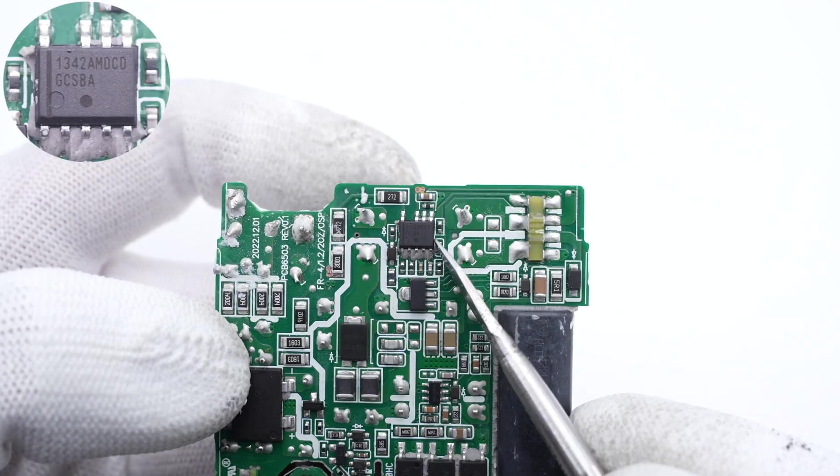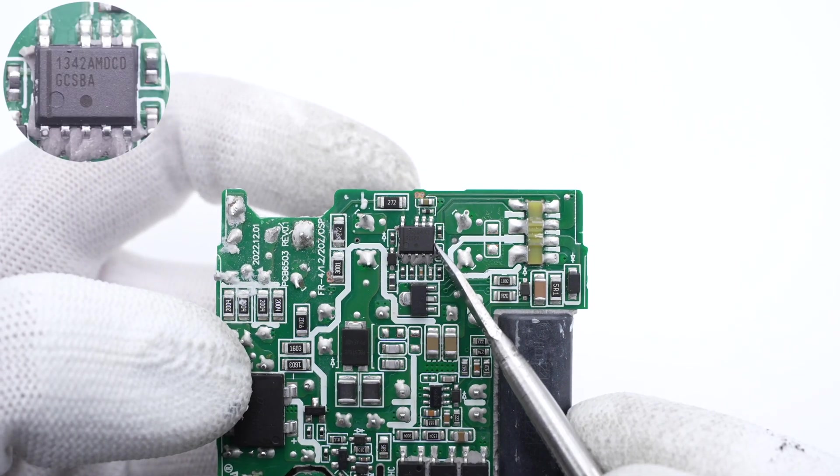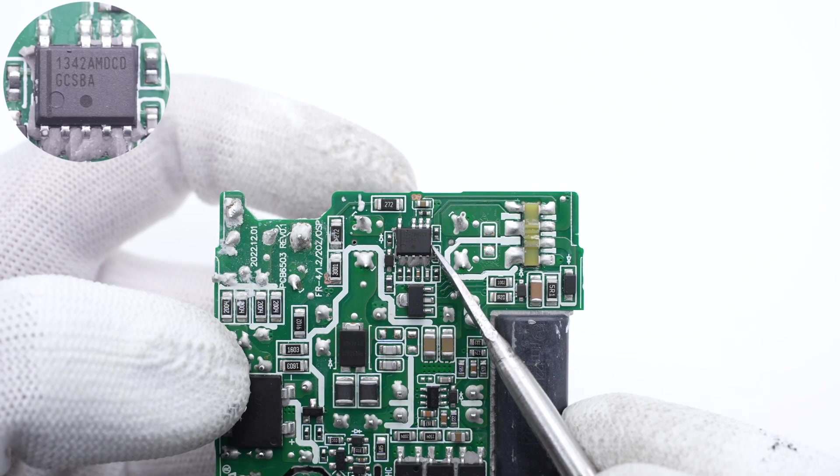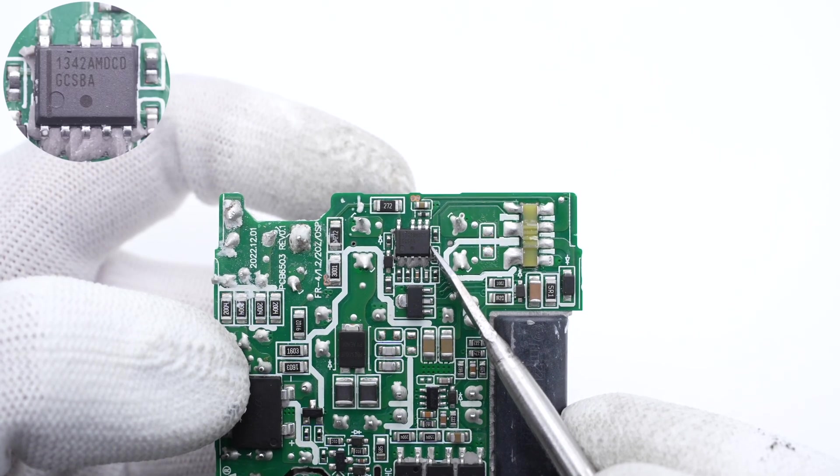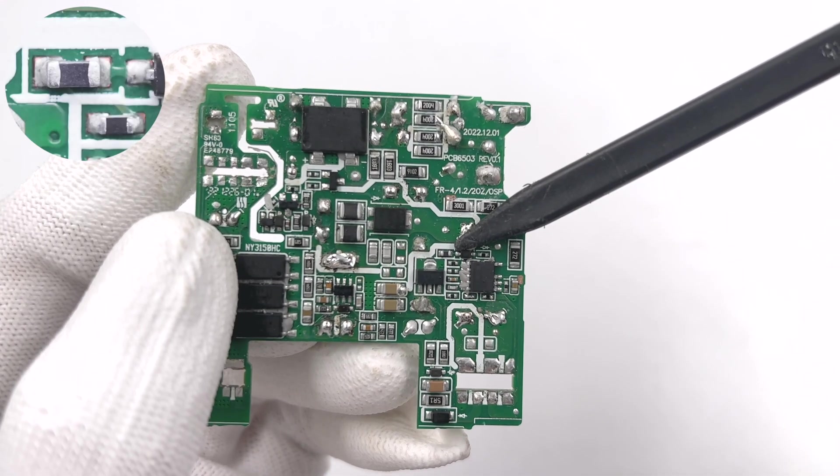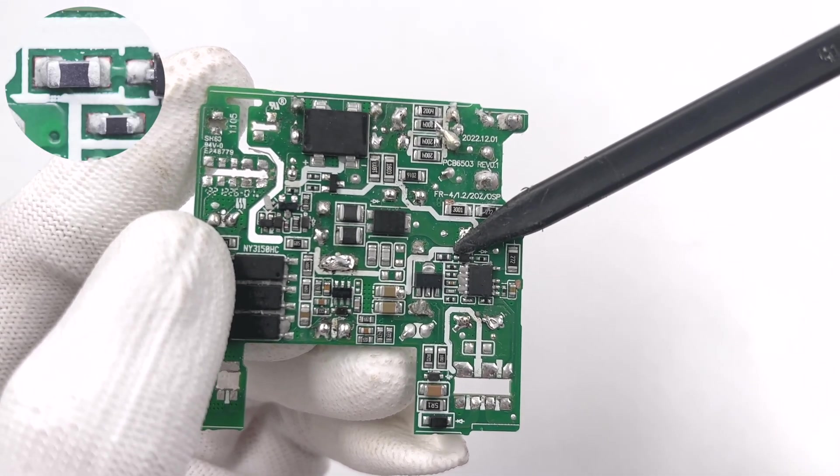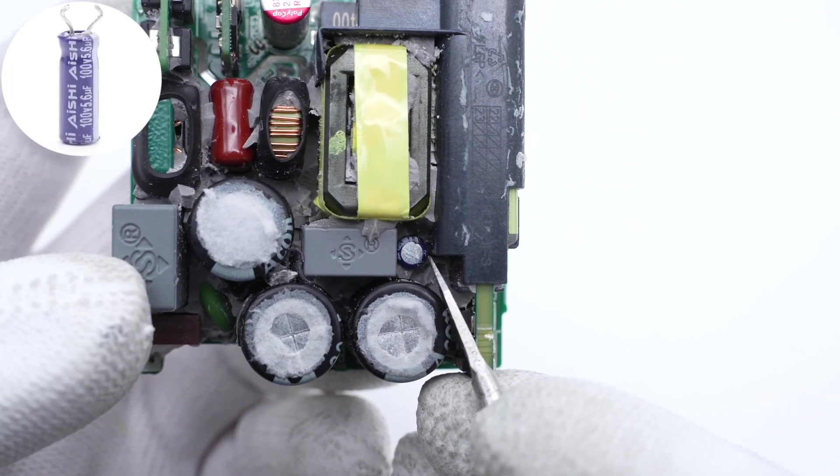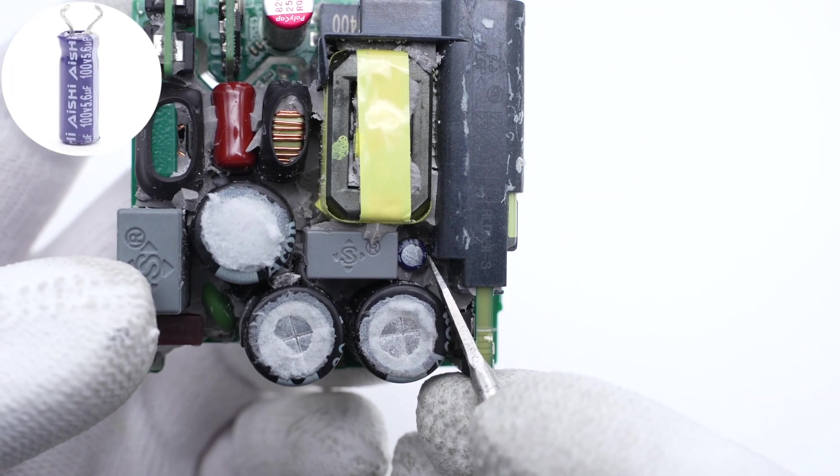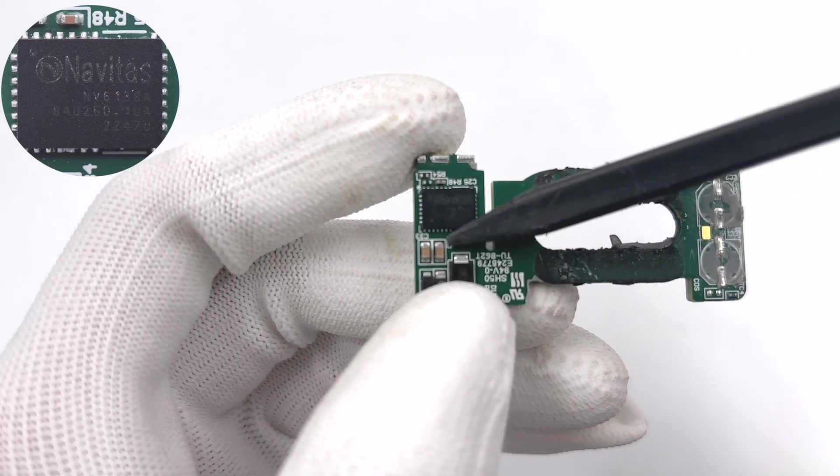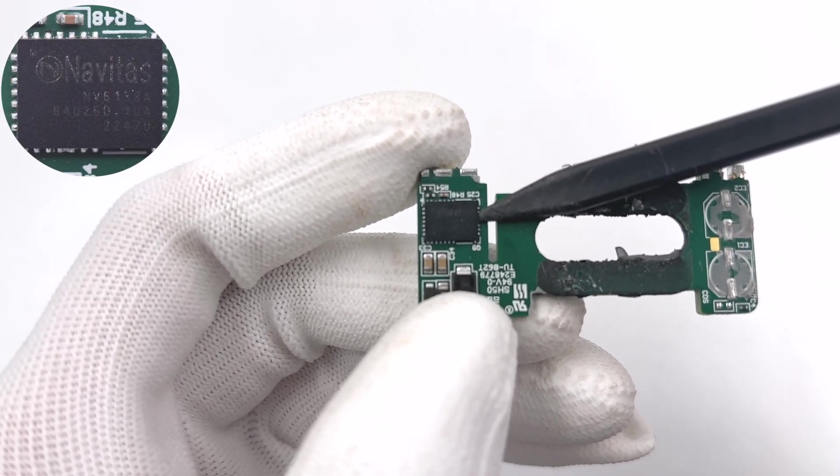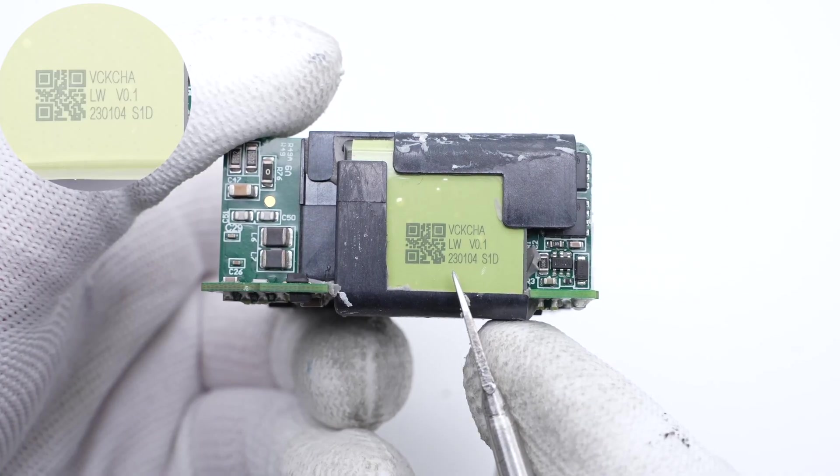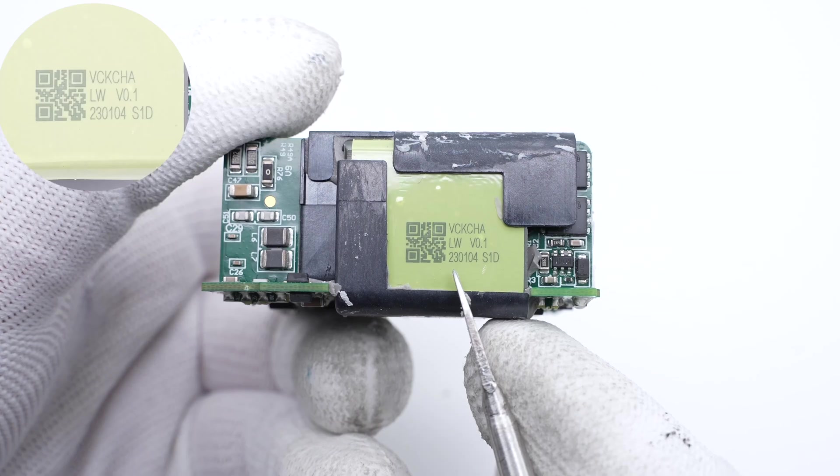The main control chip is from OnSemiconductor, which is a flyback quasi-resonant PWM controller. It integrates active X-capacitor discharge feature. The thermistor can work with main control chip to detect the temperature. This tiny capacitor that powers the main control chip is 100V 5.6μF. The primary GaN IC is also from Navitas, same as GaN IC for PFC circuit. This is the planar transformer, marked with VCKCHA.